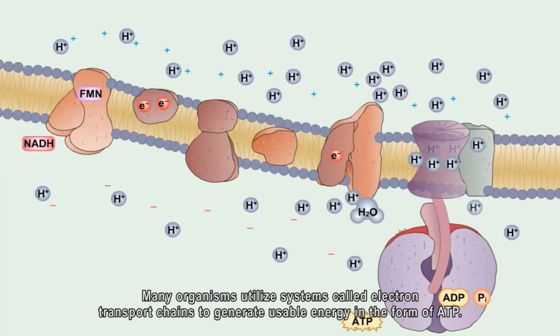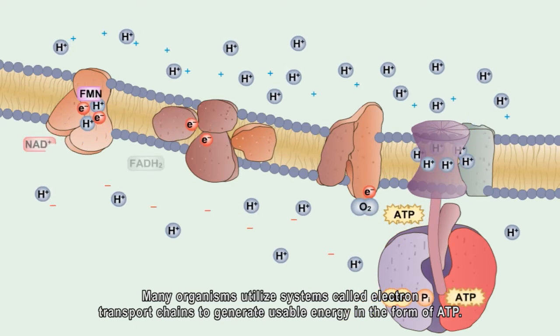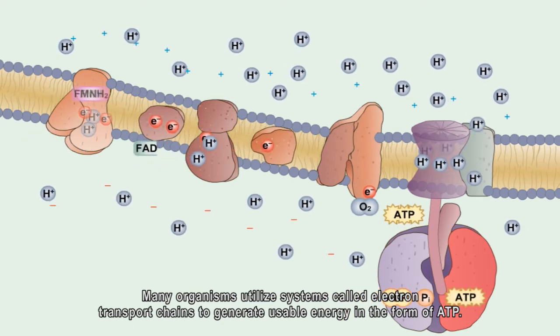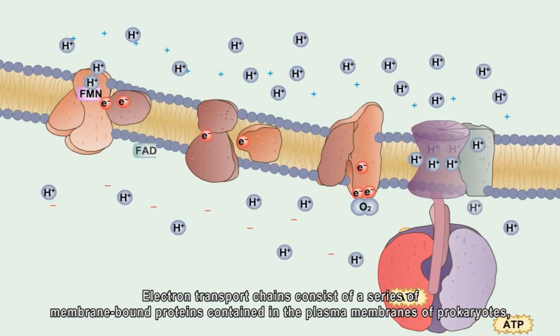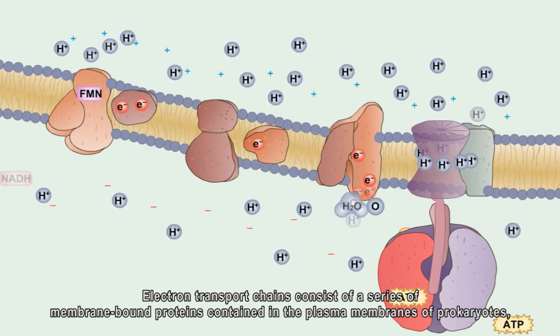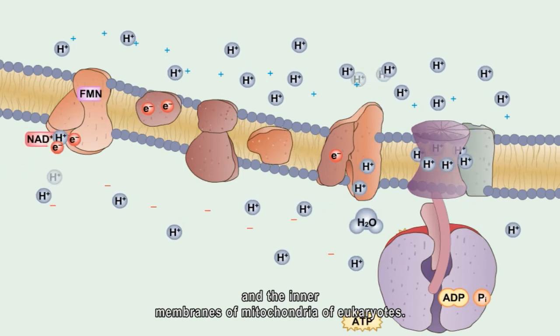Many organisms utilize systems called electron transport chains to generate usable energy in the form of ATP. Electron transport chains consist of a series of membrane-bound proteins contained in the plasma membranes of prokaryotes and the inner membranes of mitochondria of eukaryotes.